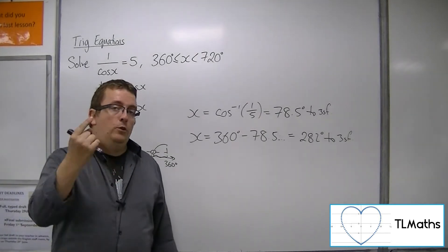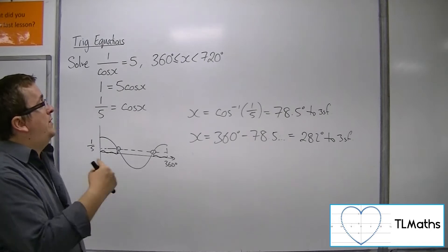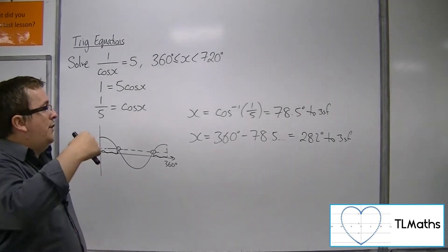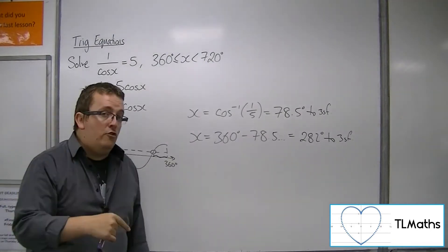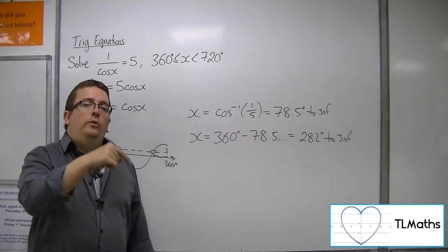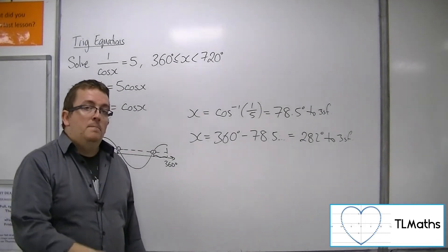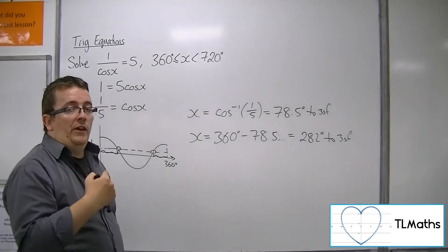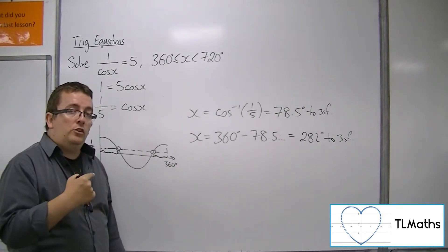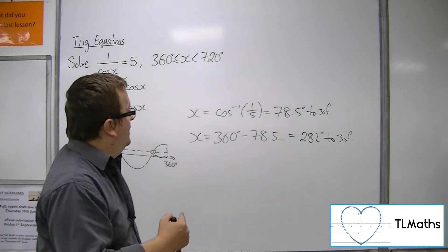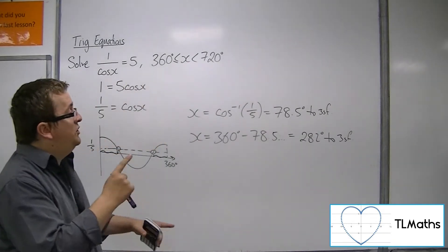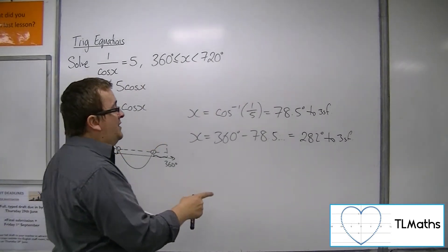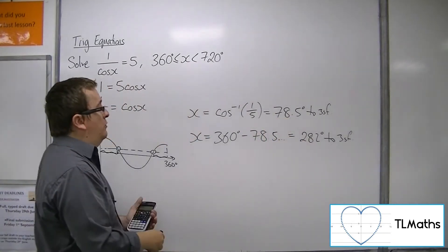However, in order to get the ones between 360 and 720, if I remember that the period of cosine was 360, meaning the curve repeats itself every 360 degrees, that means that I can get the two solutions that I do want by adding 360 to both of those results.